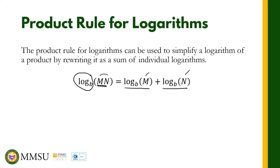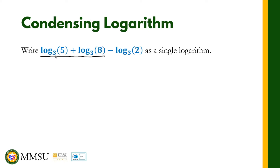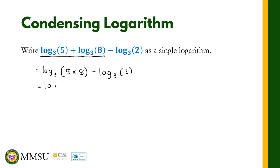So the logarithm of 5 in base 3 plus the logarithm of 8 in base 3 can now be written as the logarithm in base 3 — we just copy the base and multiply 5 and 8. That's what the product rule states. We can simplify this to the logarithm in base 3 of 40, because 5 times 8 is 40, minus the logarithm in base 3 of 2.